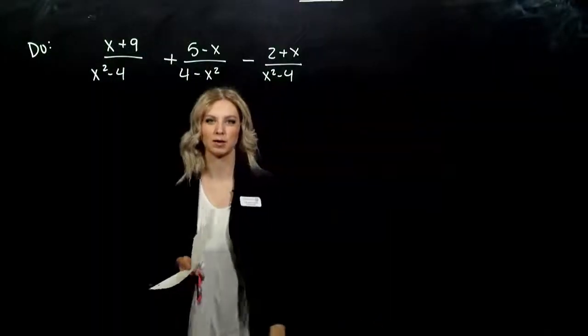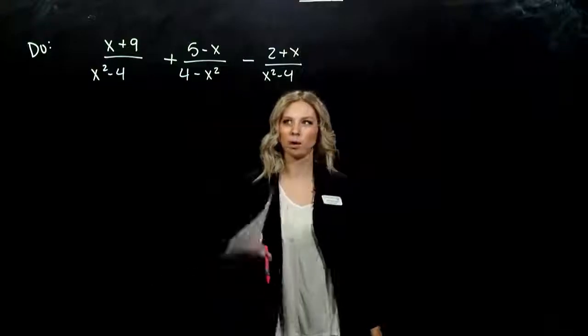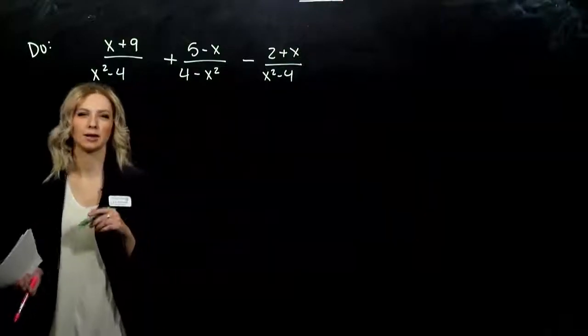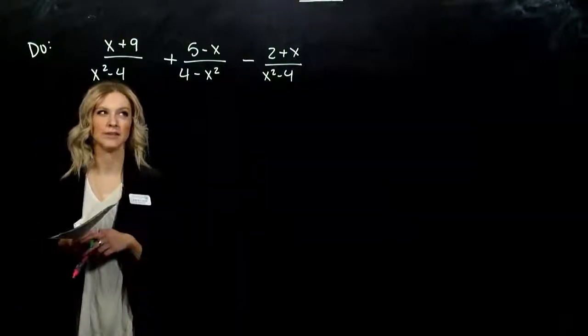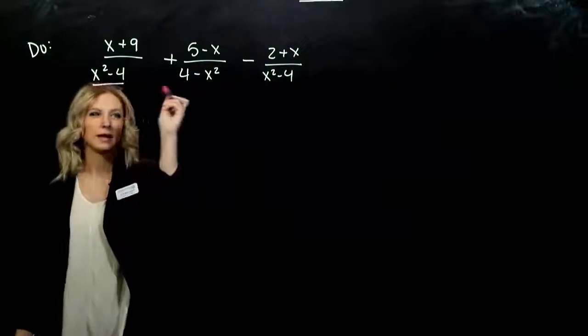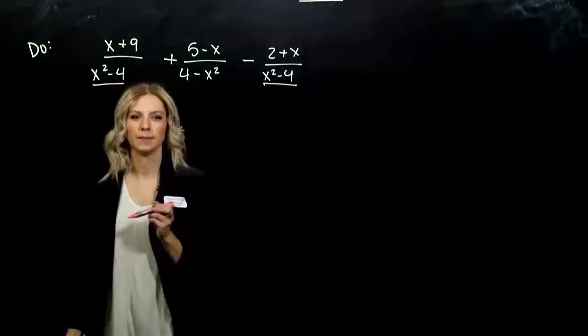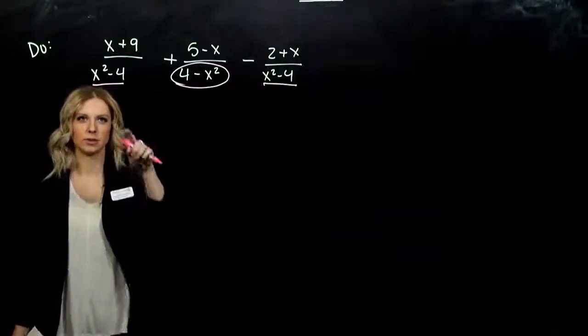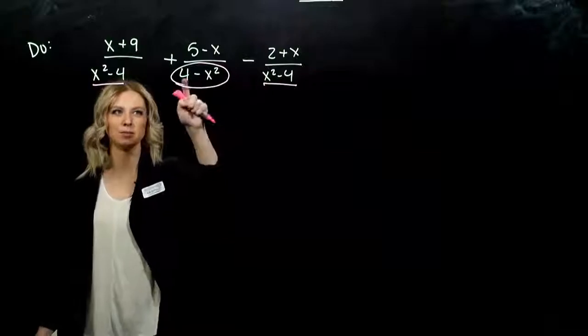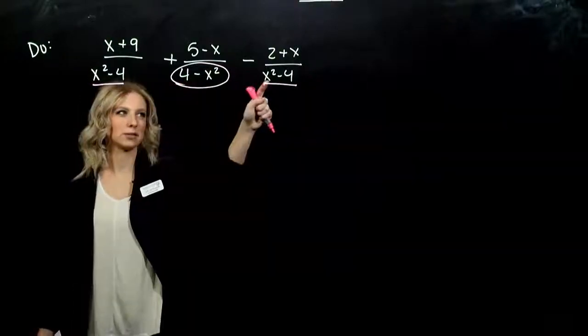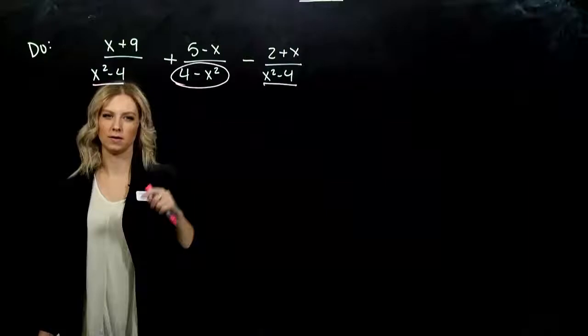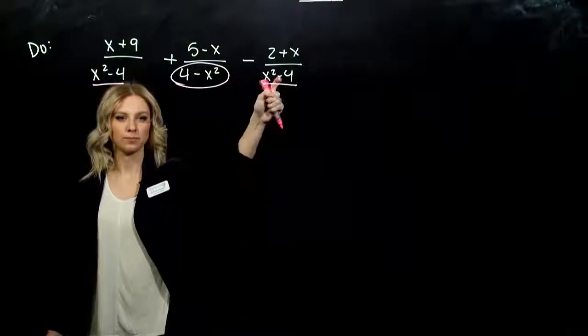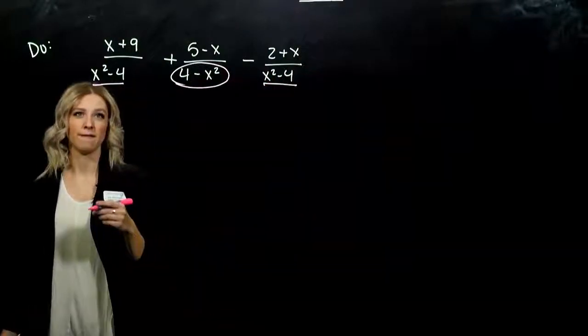As we look at this last example we're going to do together, we have a combo of addition and subtraction. We still need common denominators. Let's take a look at our denominators right now. They're very similar. The first one and the last one match exactly. But how is this middle one different than those two? They're opposites. I have negative 4 in these cases, but a positive in the middle. And positive x squared in those cases, but a negative in the middle. So what can I take out of this middle term? So my inner LCD is going to match. Factor of a negative.